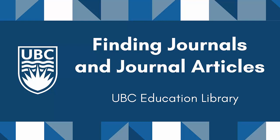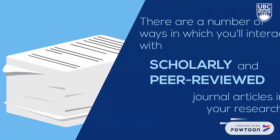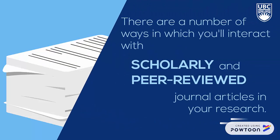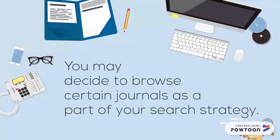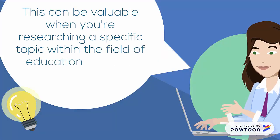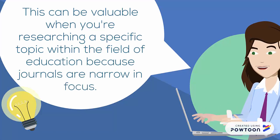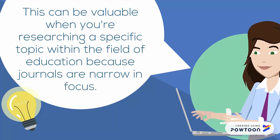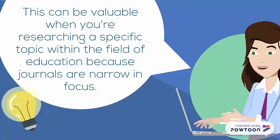This video will cover how to find journals and journal articles, which will be helpful when you need to search for journals and access specific articles for your class readings and research. There are a number of ways in which you'll interact with scholarly and peer-reviewed journal articles in your research. You may decide to browse certain journals as part of your search strategy. This can be really valuable when you're looking for resources on a certain topic within the broader field of education, because most journals are even more narrow in focus than a subject database would be.